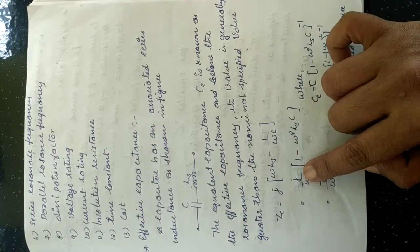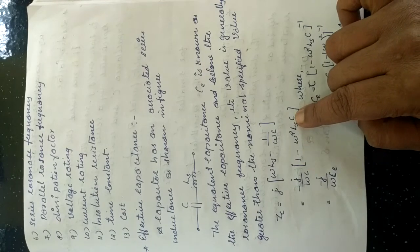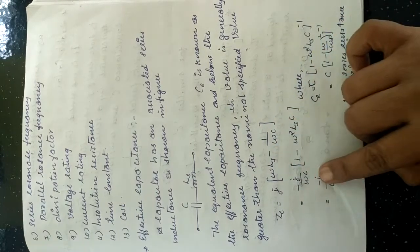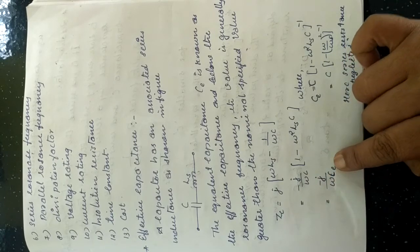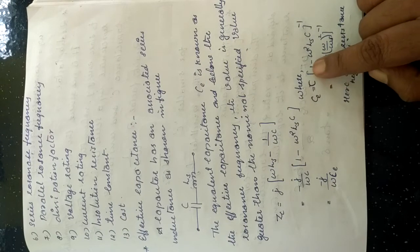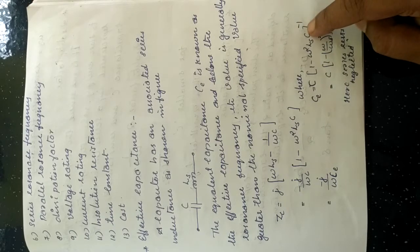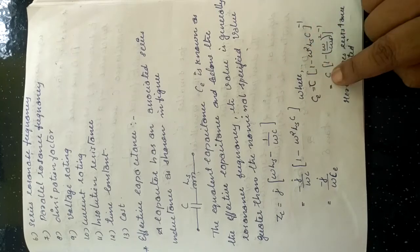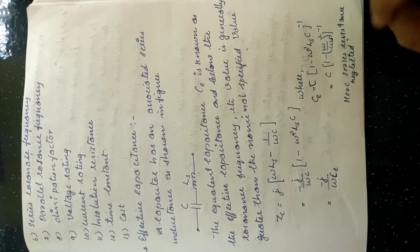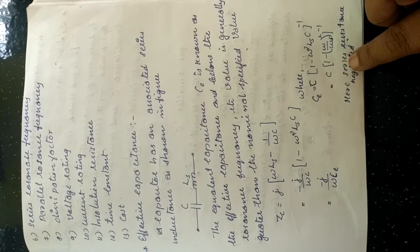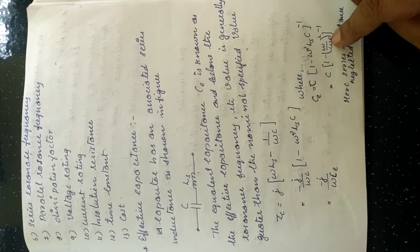From the impedance expression, we can derive: Z = −j/(ωC) × 1/(1 − ω²LsC). We can convert this expression so that the effective capacitance Ce = C × (1 − ω²LsC)⁻¹, which simplifies to C × (1 − (ω/ωs)²)⁻¹. Here we neglect the series resistance because its value is much less than 1.